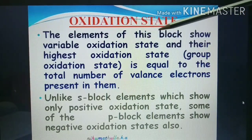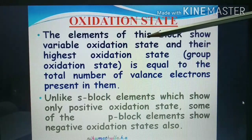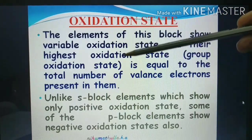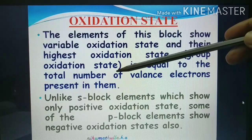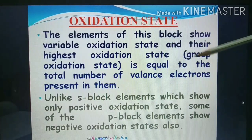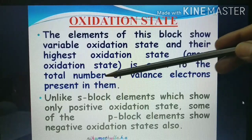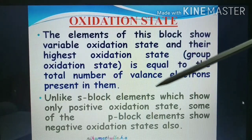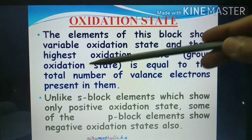But the elements of P-Block show variable oxidation states — more than one oxidation state. Their highest oxidation state, that means the group oxidation state, is equal to the total number of valence electrons present in them — the number of electrons present in the outermost shell.